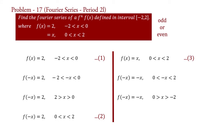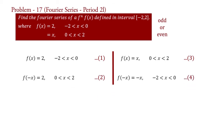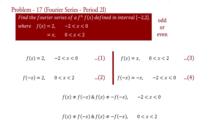Therefore, f(minus x) equal to minus x for 0 greater than x greater than minus 2. Inverse the order of the interval. Therefore, f(minus x) equal to minus x for minus 2 less than x less than 0. Say equation 4. From equations 1 and 4 we found that f(x) is not equal to f(minus x) and f(x) is not equal to minus f(minus x) in interval minus 2 to 0. And from equations 2 and 3 we also found that f(x) is not equal to f(minus x) and f(x) is not equal to minus f(minus x) in interval 0 to 2. It means function f(x) is neither even nor odd.